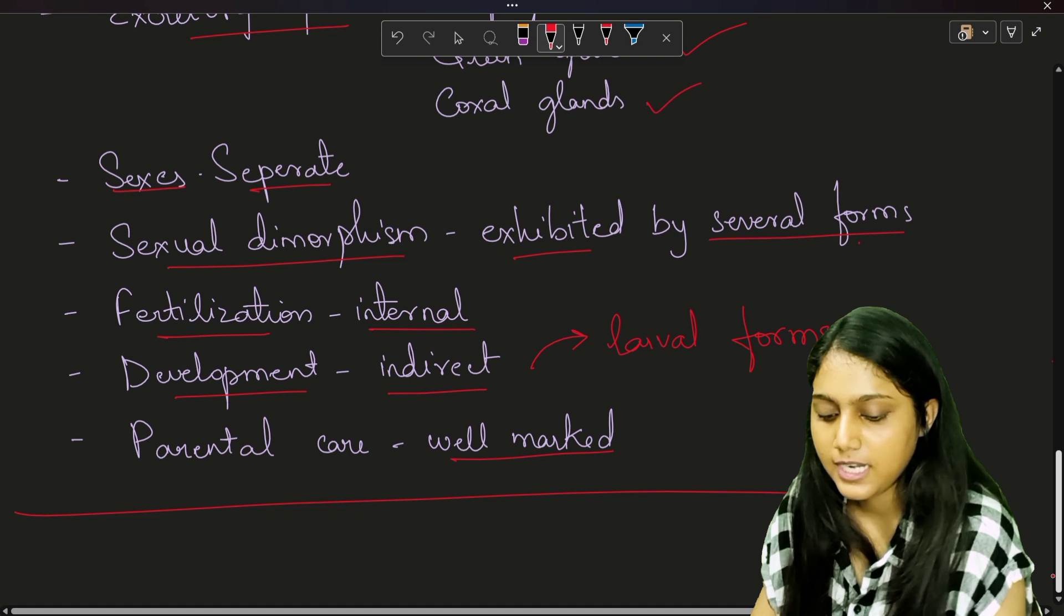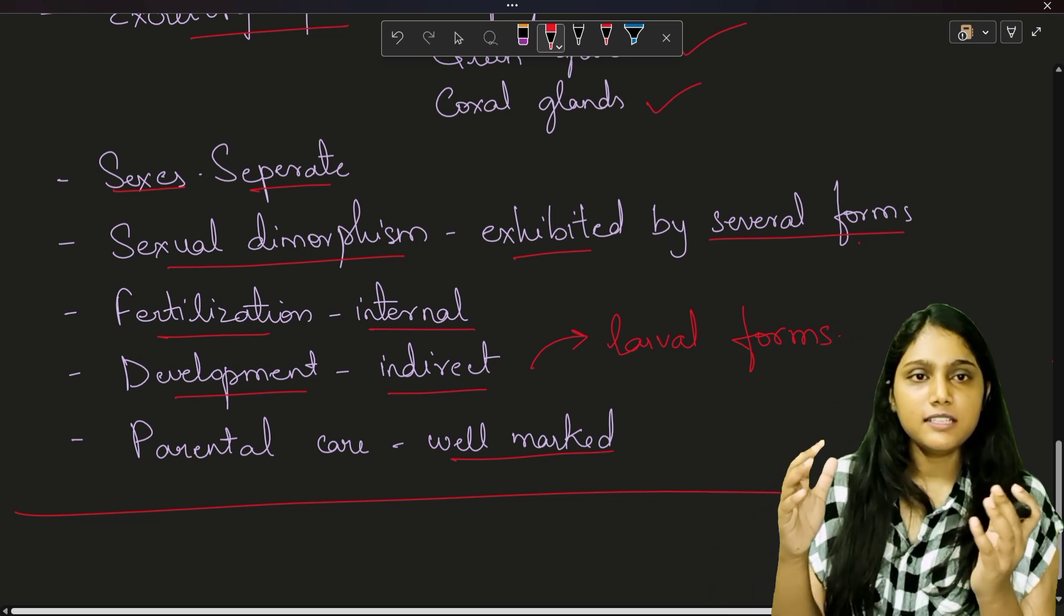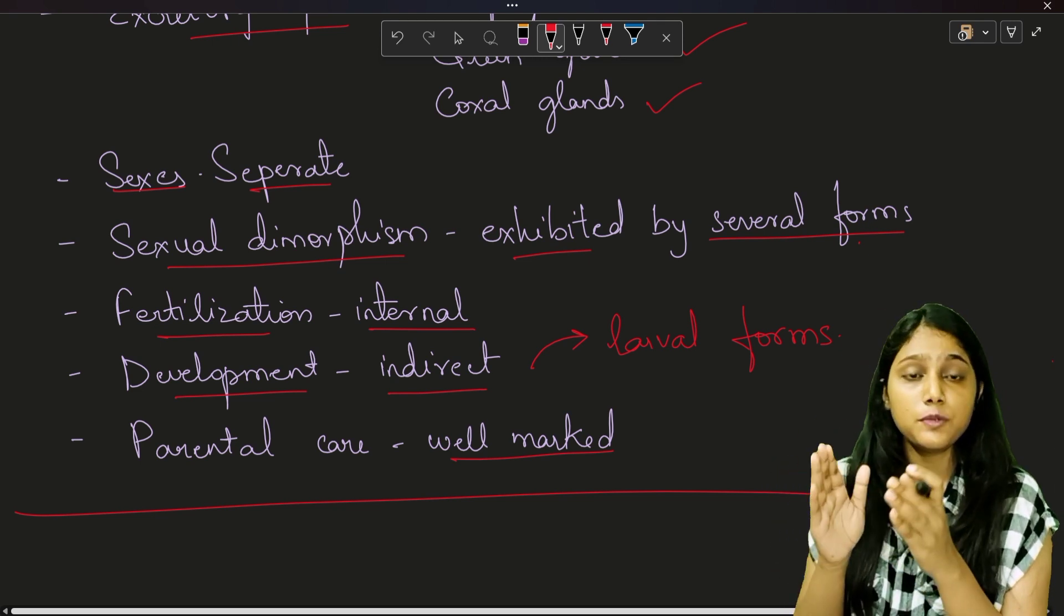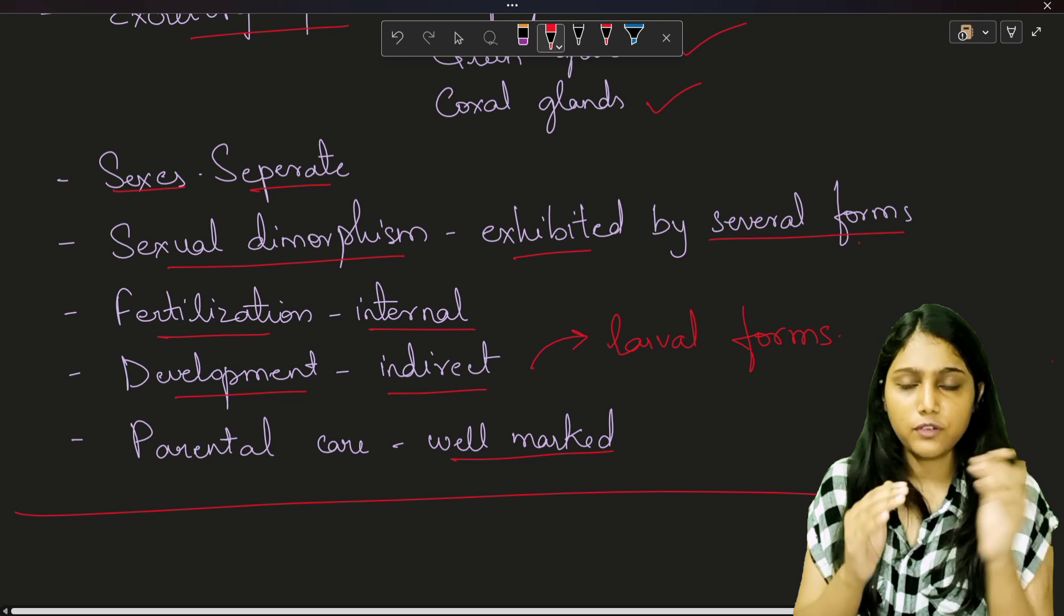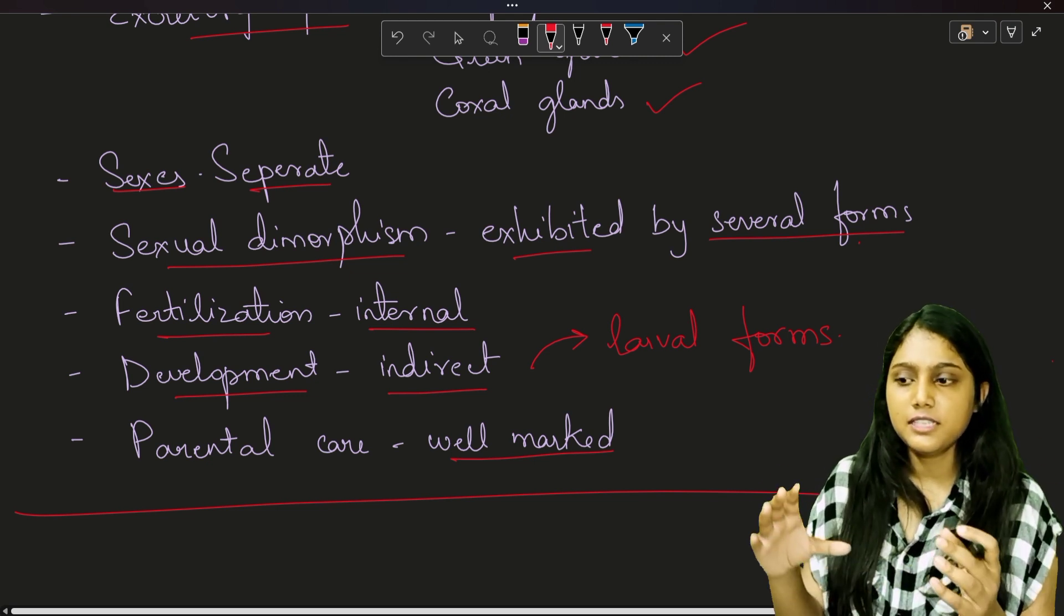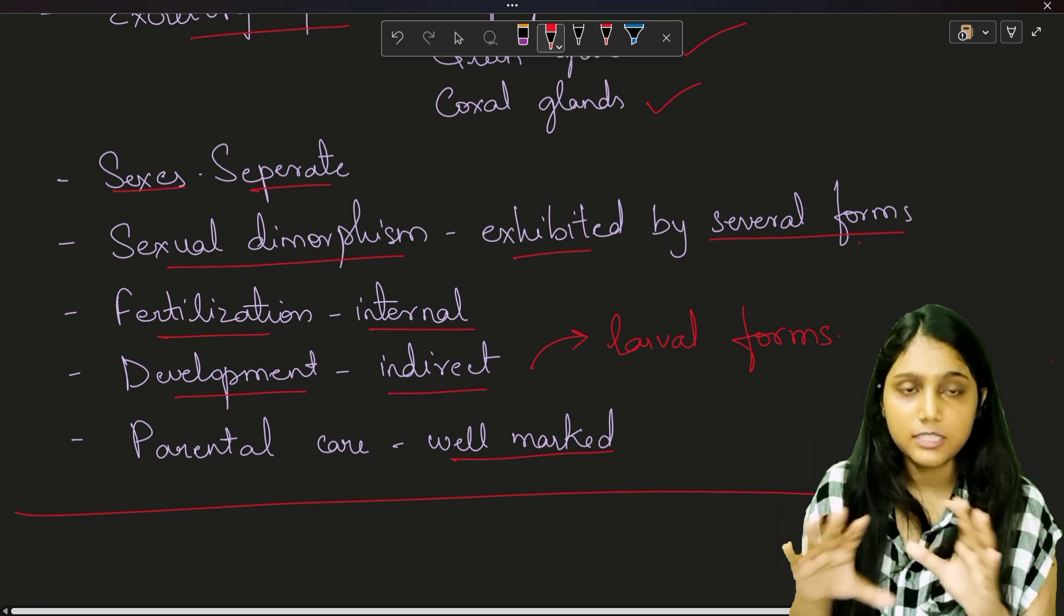So with this our answer ends. That was it for today's video. General characters, so that's why the video was small. I had discussed in the beginning general characters are very small because this question is usually paired with the classification of Phylum Arthropoda. Classification is slightly bigger, so that is the reason why the video was small so that we can write a good answer.